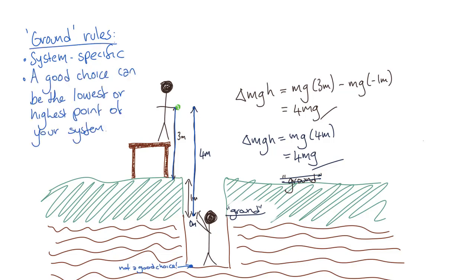So, for example, if earlier we'd chosen our ground to be 60 meters above the ground, then the person on the table would have been at minus 57 meters, and the person in the hole would have been at minus 61 meters. It just leads to some fairly ugly numbers.